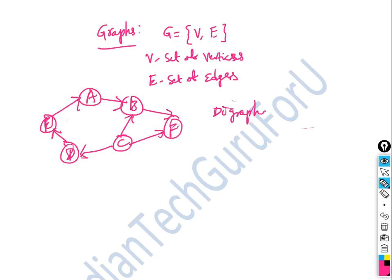Graphs with directions are called a digraph — a directed graph. Graphs without directions, such as A, B, C, are called undirected graphs. That's why we call them undirected graphs.